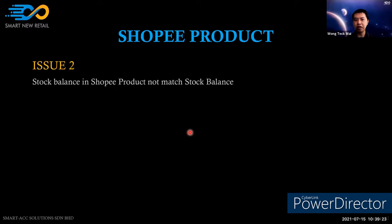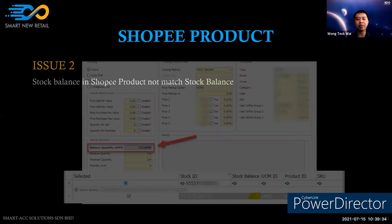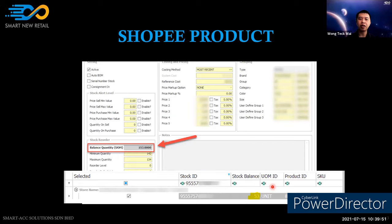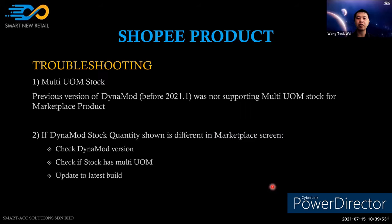The second issue is: why does the stock balance in the Shopee store not match the stock balance in Dynamo? For example, stock maintenance shows a balance of 153, but after downloading to Dynamo, the Shopee store shows 53 — a difference of 100.